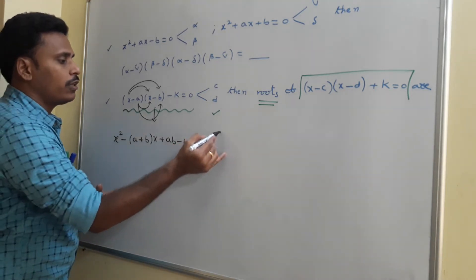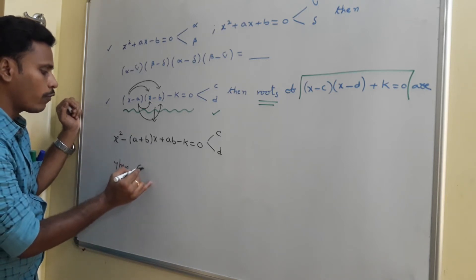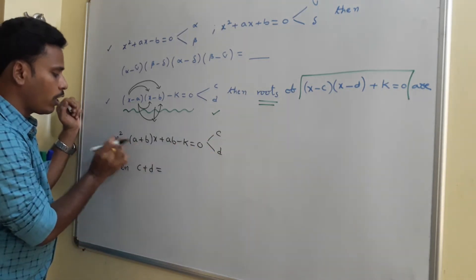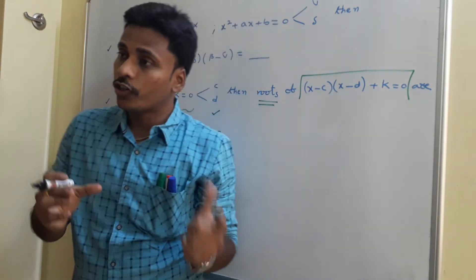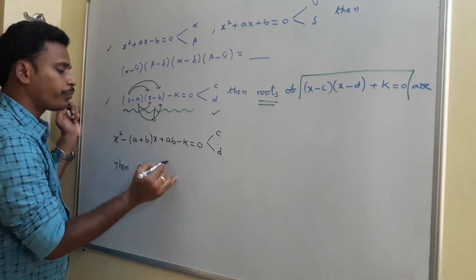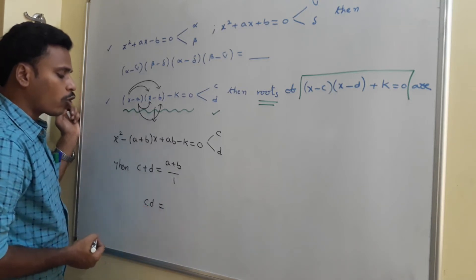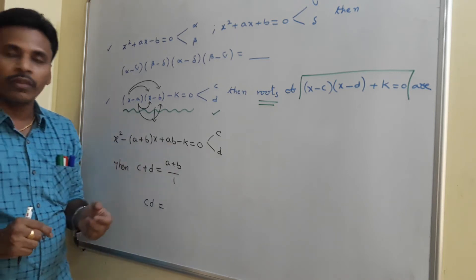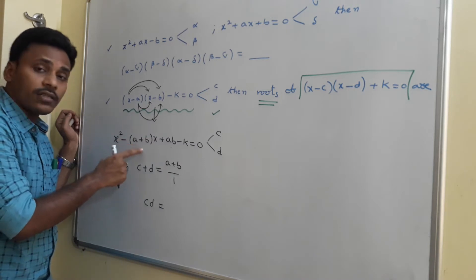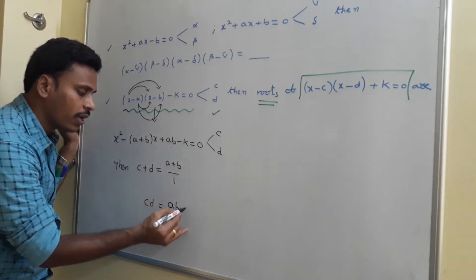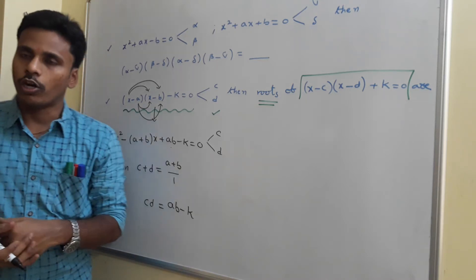Since the roots of this equation are c and d, we write the sum and product of roots. Sum of roots: c plus d equals minus(x coefficient) divided by (x² coefficient) = minus(minus(a+b))/1 = a+b. Product of roots: c times d equals the constant term divided by x² coefficient = ab minus k.